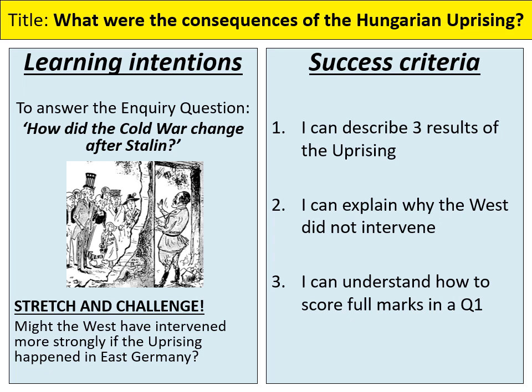This lesson we're going to be looking at the consequences of the Hungarian uprising 1956. On Schoology there are photocopies of the textbook for this — you don't need it unless you really want every precise factual detail; this PowerPoint should be enough for almost all of you. The third success criteria says 'I can understand how to score full marks in a question one.' We don't expect you to do a question for this one — you should already have done a question one on the Truman Doctrine — but if you want to complete it and send it in, we'll happily mark it.